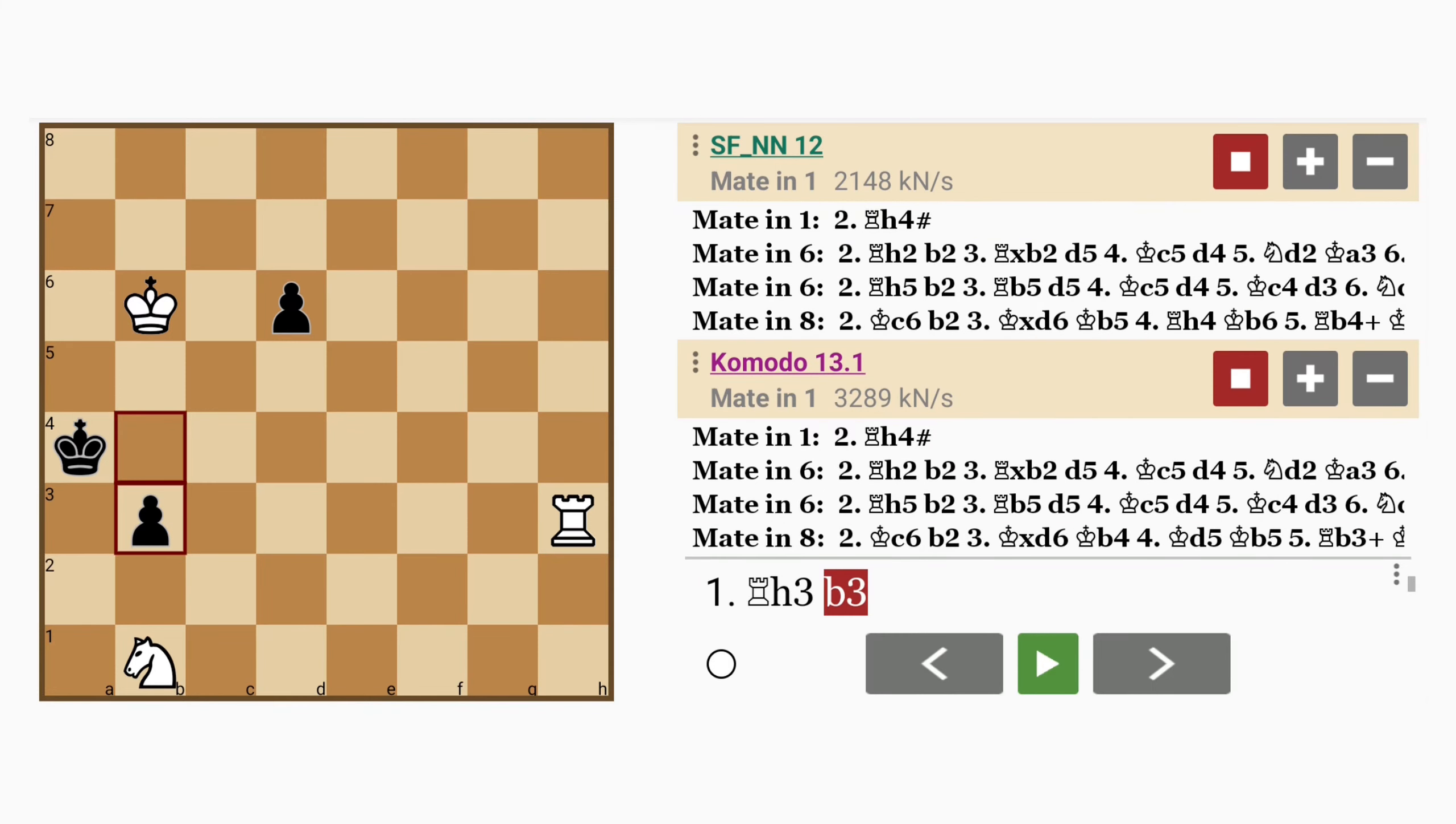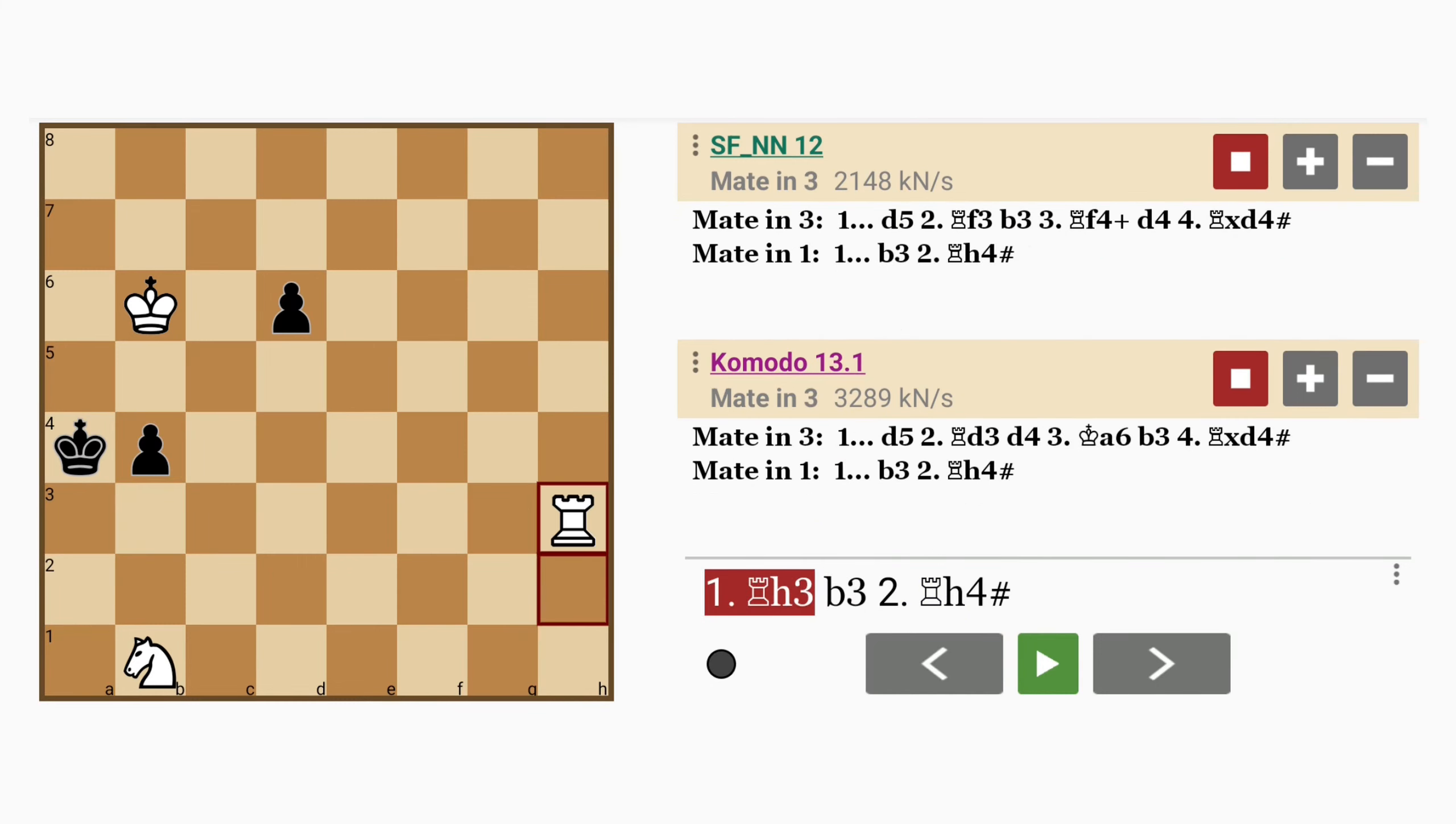So if pawn to b3, rook to h4 is mate, believe it or not. The pawn blocks the b3 square. So black cannot play that. The king cannot move. What is left?